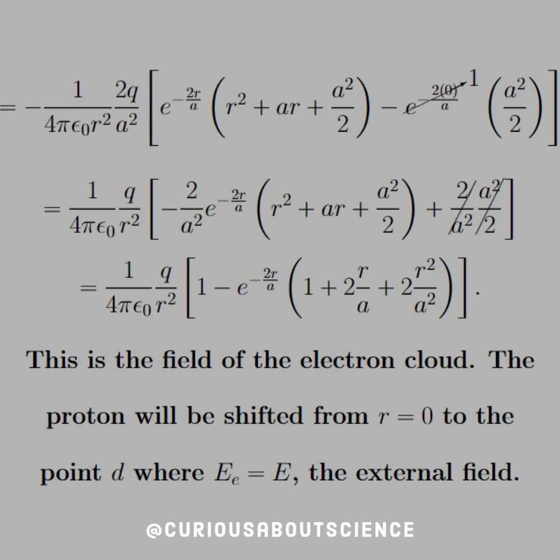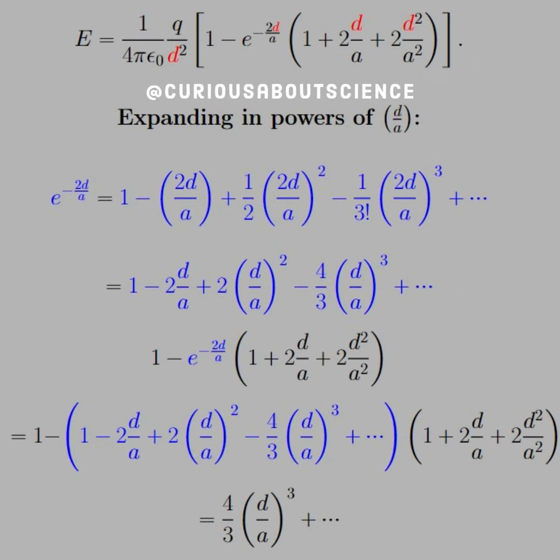This is the field of the electron cloud. The proton will be shifted from r equals 0 to the point d, where e sub e is equal to e, the external field. This now modifies the electric field in terms of d, not r, which we see in the red.